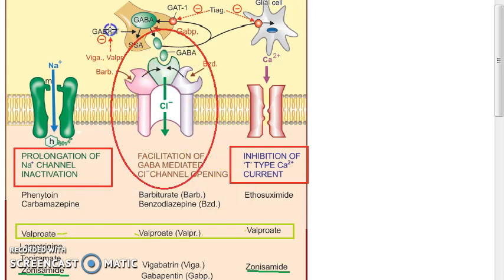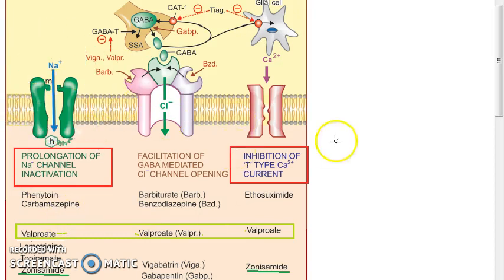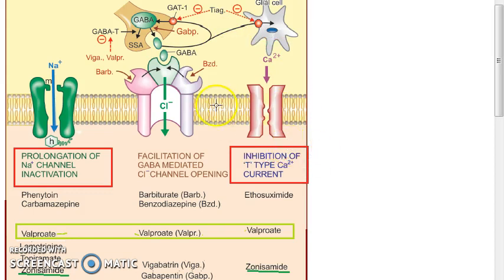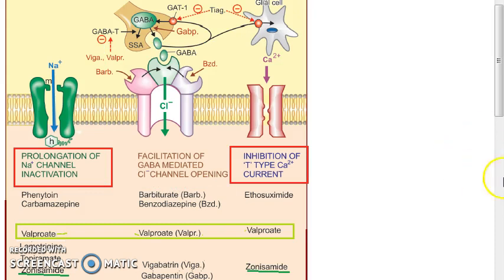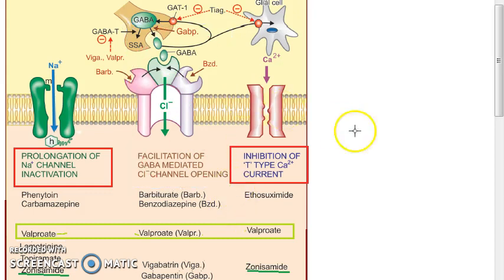When GABA binds, there will be inhibition. So sodium channel prolongation of inactivation, inhibition of the calcium current, and facilitation of GABA mediated — the chlorine channel will open. GABA binds and the chlorine channel opens.